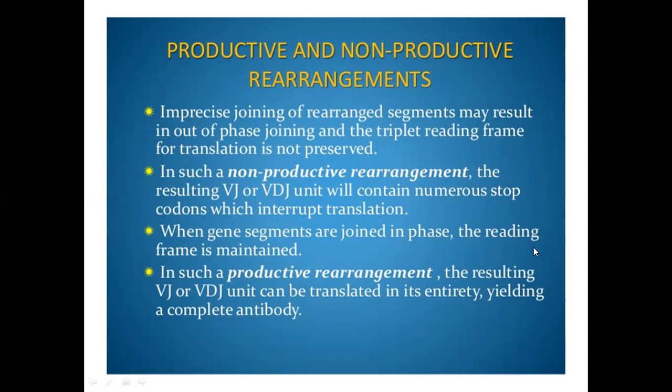The resulting VJ or VDJ unit will contain numerous stop codons which interrupt the translation. If it is an unproductive rearrangement, that leads to stop codons in the mRNA transcript. If more stop codons are present, that leads to the premature termination of the translation process.